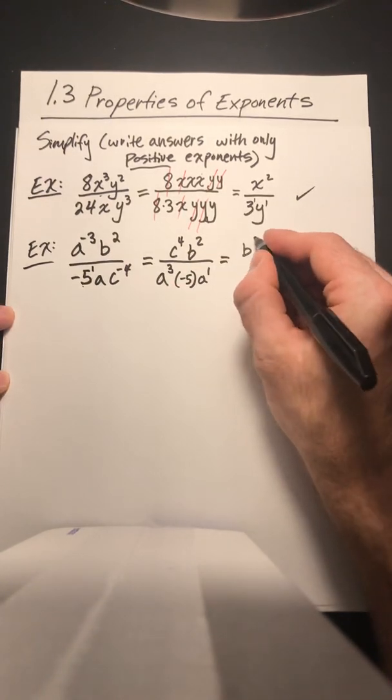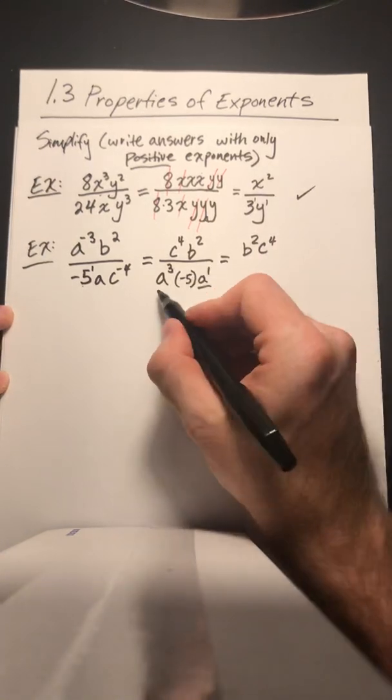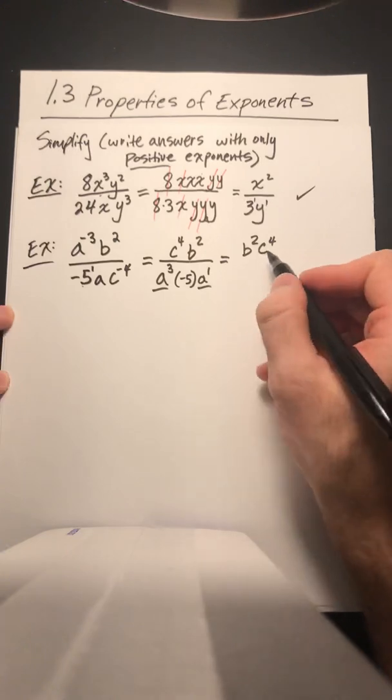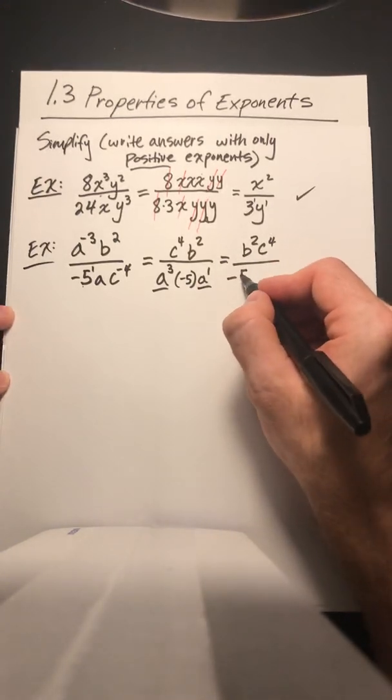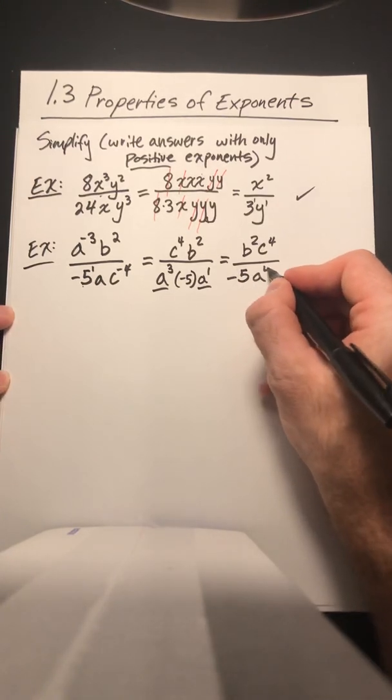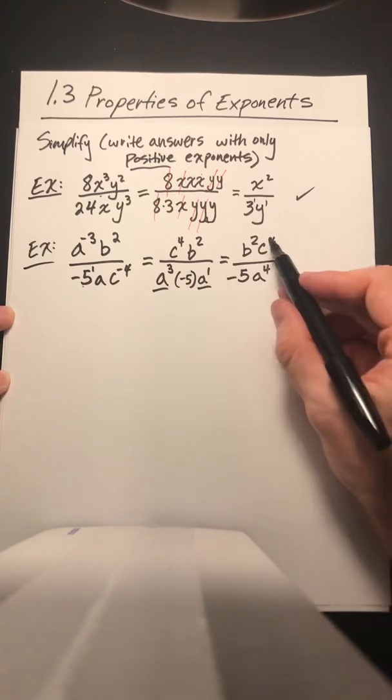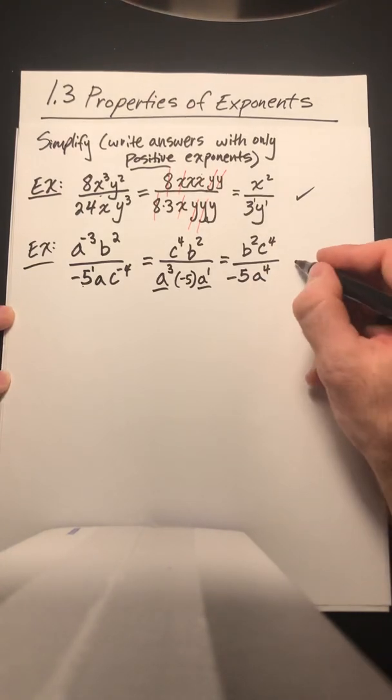Now last thing I can do here, looks like the top is pretty much good to go. But I have an a here and I have three a's there. So how many a's total? I have four of them. I like to write my coefficients first. So I've got a negative 5 here and then I have a to the 4. Alright, looks like all my exponents are positive. So I'm simplified.